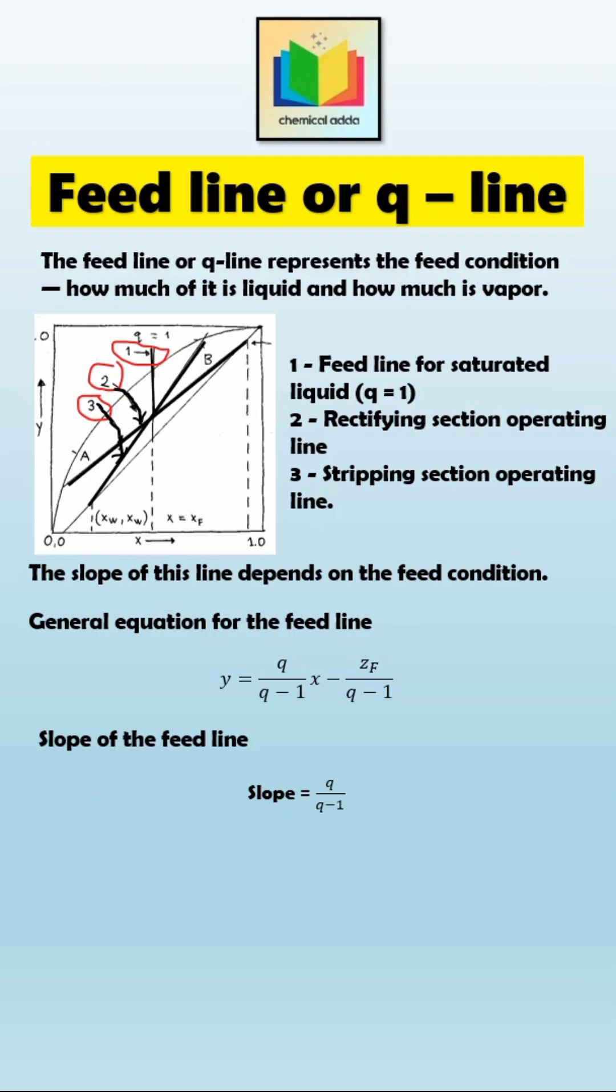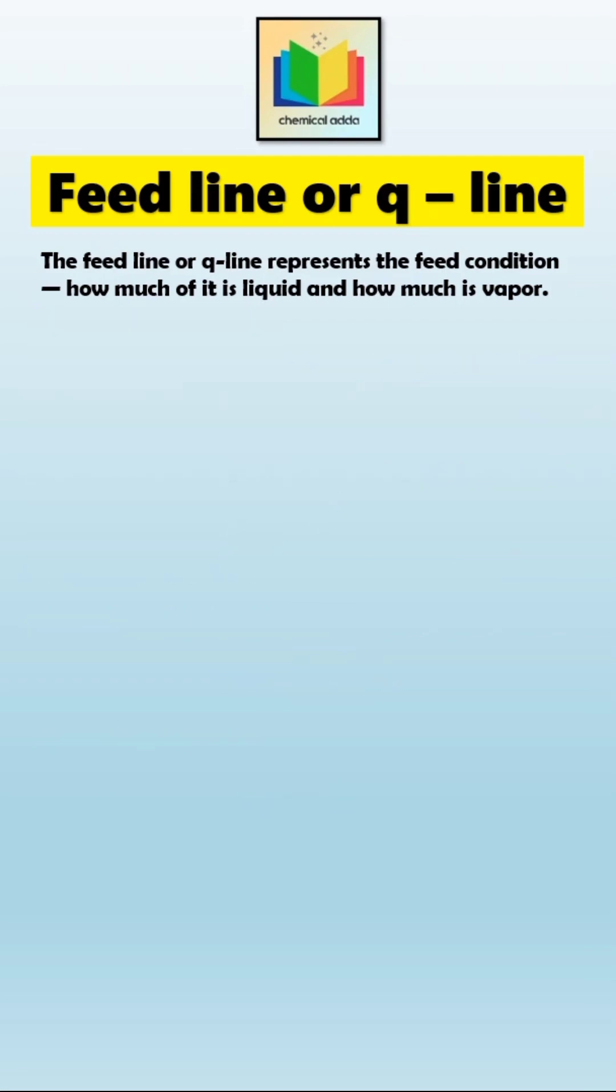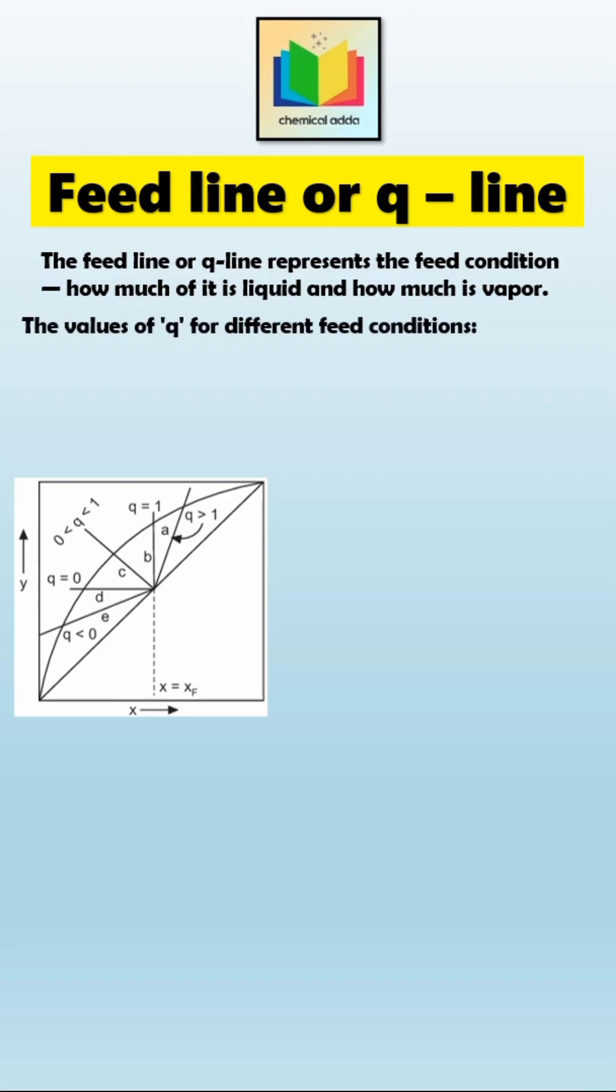Based on the value of Q, the line changes its slope and direction. Let's quickly see how the slope of the Q line changes for different feed conditions.